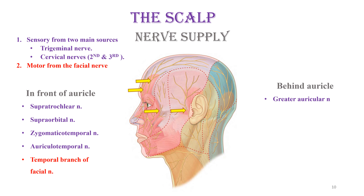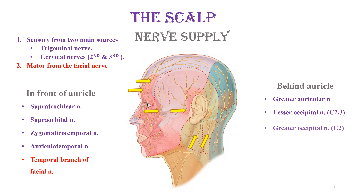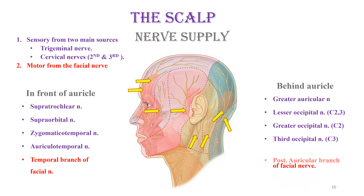Behind the auricle, we have the greater auricular, the lesser occipital, the greater occipital nerve, the third occipital nerve, and the only motor will be the posterior auricular branch of the facial nerve.